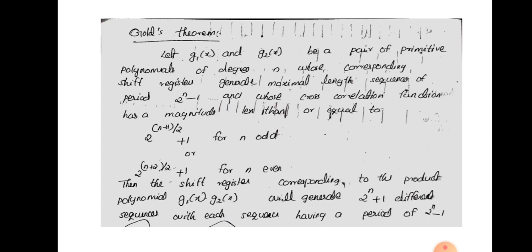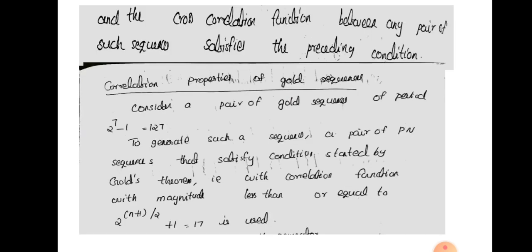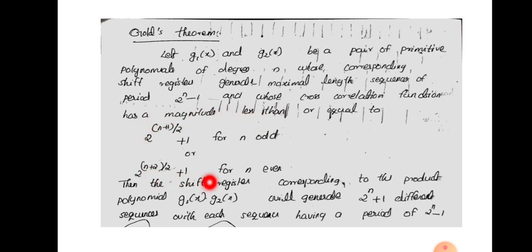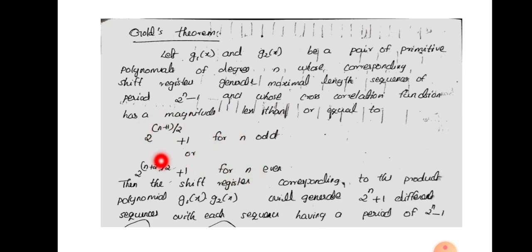This is Gold's theorem. The cross-correlation value of the Gold codes is bounded by 2^((n+1)/2) + 1 for n odd, or 2^((n+2)/2) + 1 for n even. The Gold codes are generated from a pair of PN sequences, and the cross-correlation between any pair of Gold code sequences satisfies this condition.